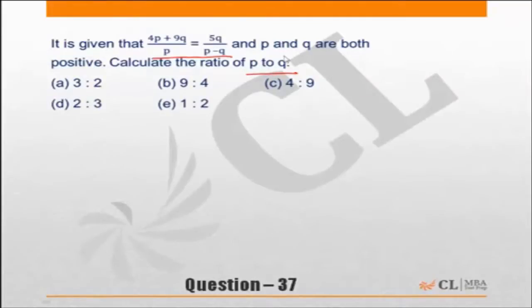This question is solved by many using cross multiplication, componendo and dividendo, and many other methods which I have never used. My way of solving is very simple. I will use the choices. The question asks for the ratio of p to q, which means each choice represents this ratio.